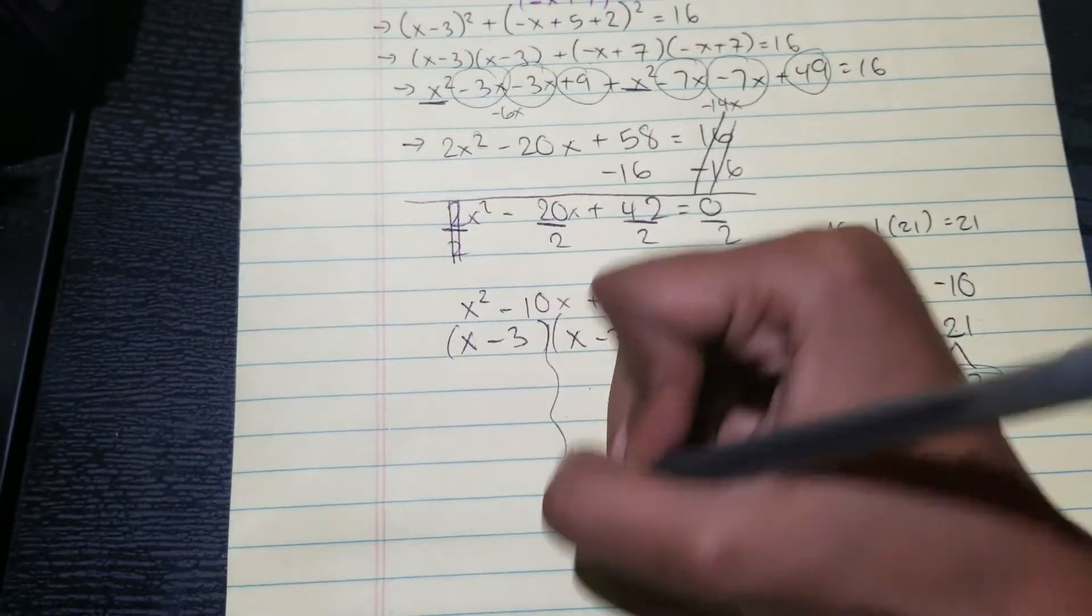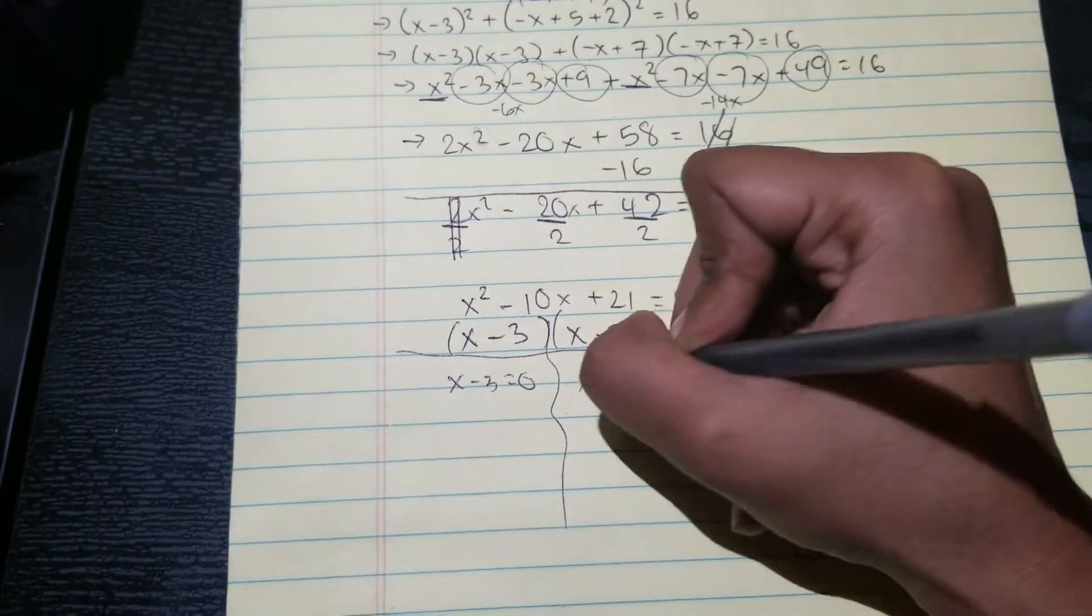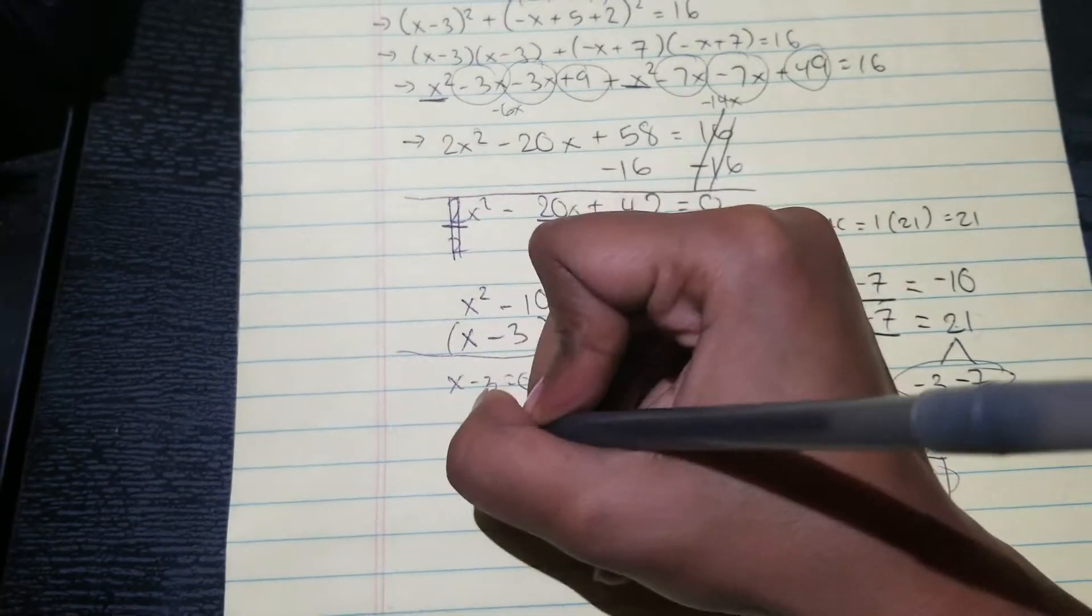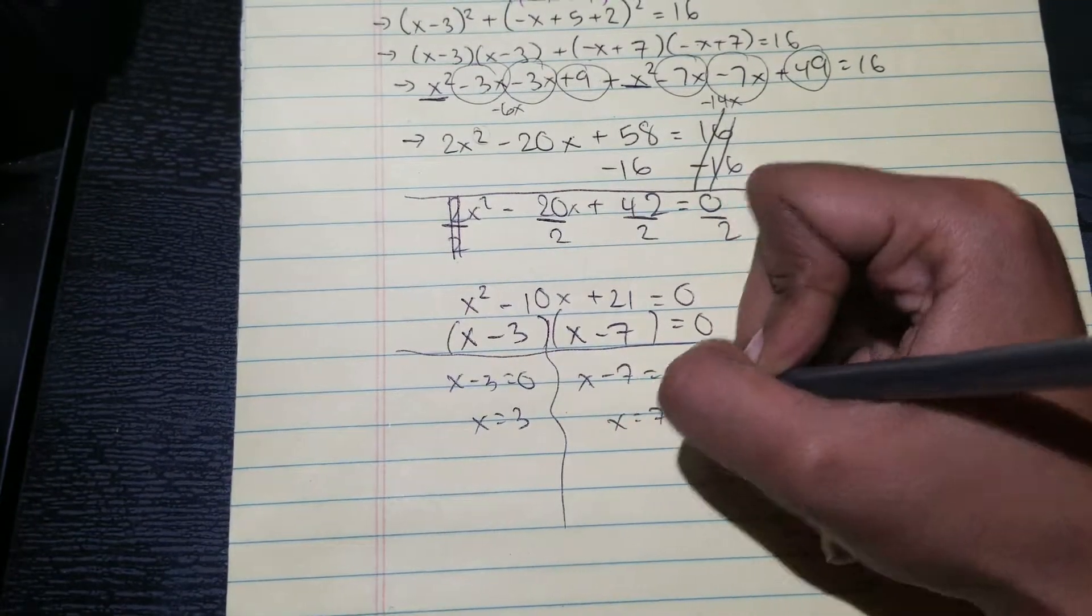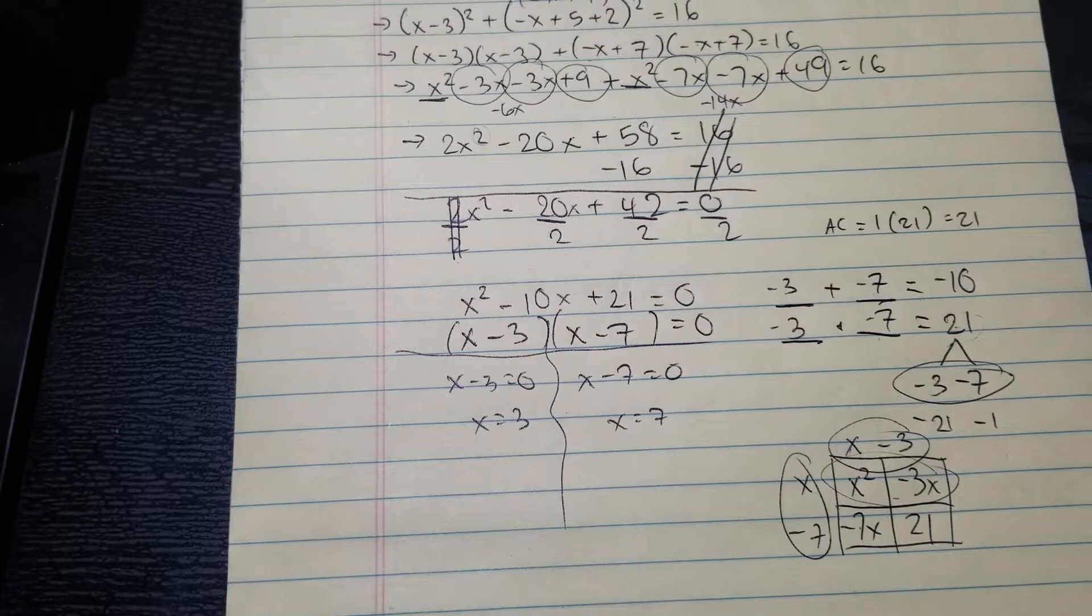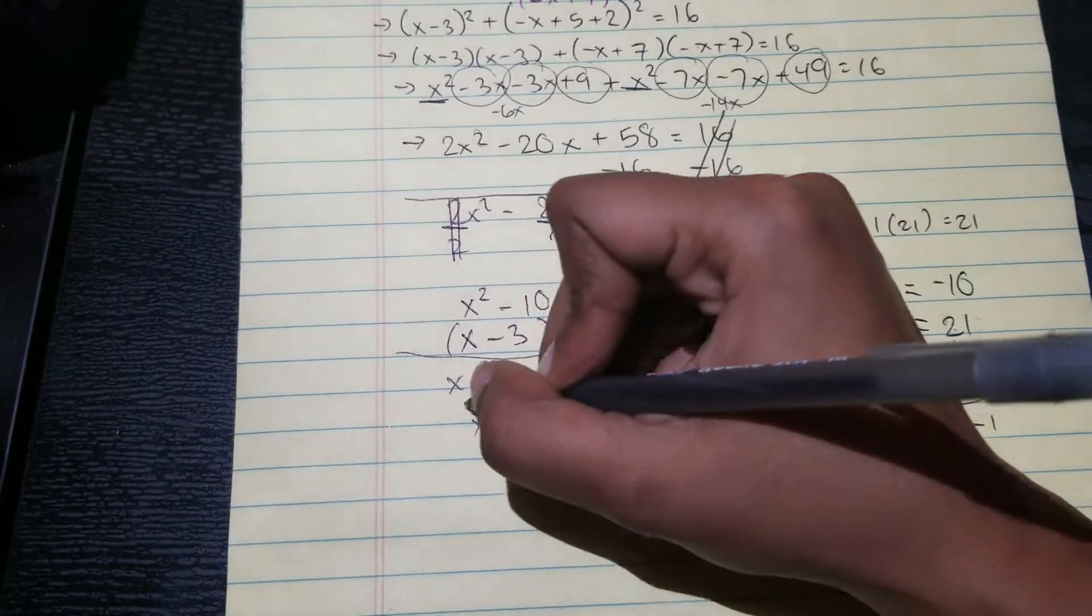Okay, so then we're trying to solve for the x values. So I'm gonna do a little T-chart. X minus three equals zero, x minus seven equals zero. X equals three, and then x equals seven. All right, cool.